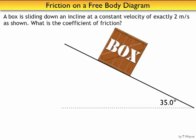This video will show you how to work a free body diagram problem where friction is involved on an incline. A box is sliding down an incline at a constant velocity of exactly 2 meters per second as shown. What is the coefficient of friction?